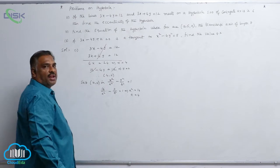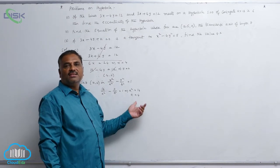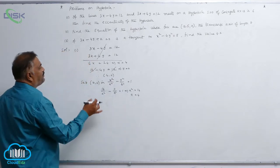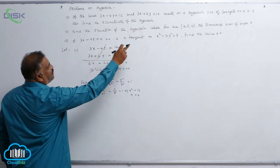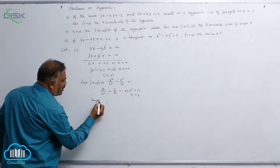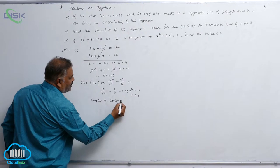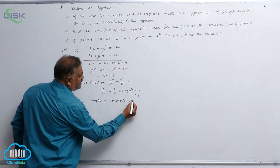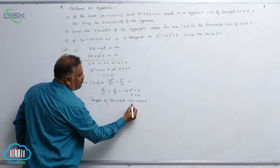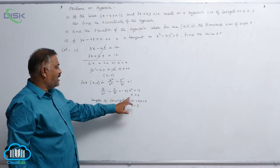Therefore a equal to 4. We do not take the negative sign because a is the semi-transverse axis, which is a positive length. It is also given that the length of the conjugate axis is 2b equal to 6, so b equal to 3.